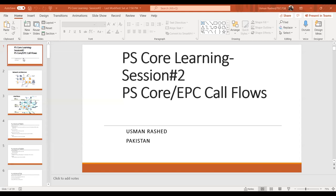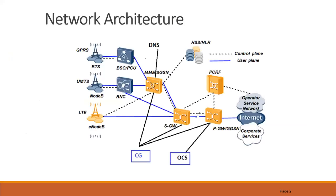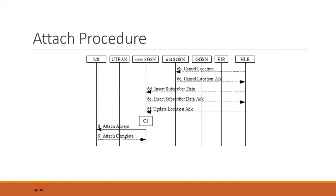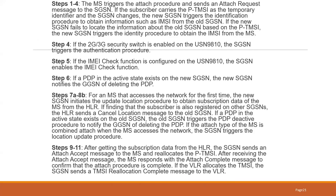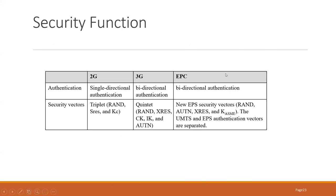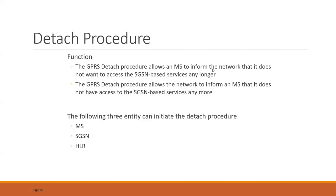In the last session we looked at the PS4 and EPC call flows, primarily the mobility management profile. We concluded our session having finished mobility management. We had an overview of the first session, then we looked at the attach procedure, and we saw how the attach procedure for 2G and 3G was a little bit different compared to 4G. Then we took a look at the authentication function and how authentication was being done from the HLR and HSS.